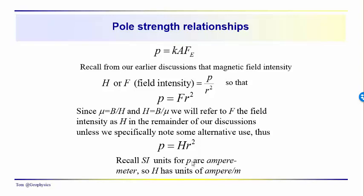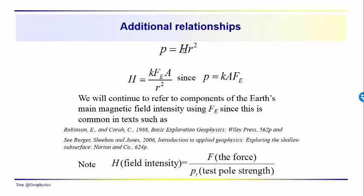Standard international units for P are the ampere meter, as we showed earlier. H has units of ampere per meter. You can see where the R squared, in meters using standard international MKS units, gives us ampere meters. An additional relationship is that P is equal to H times R squared. H is also equal to K times the magnetic field intensity of the Earth over R squared, so we get P equal to K times A times F sub B, an expression we can also use for the magnetizing field of the Earth.